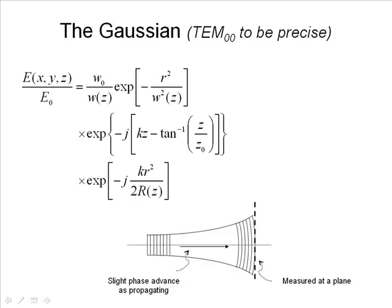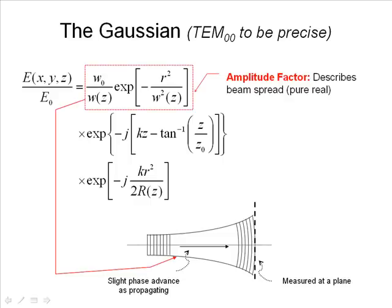So let's go ahead and look at these three terms again. Here we have a picture of a laser beam. This first equation is the amplitude factor. It describes the beam spread. It's a purely real term.